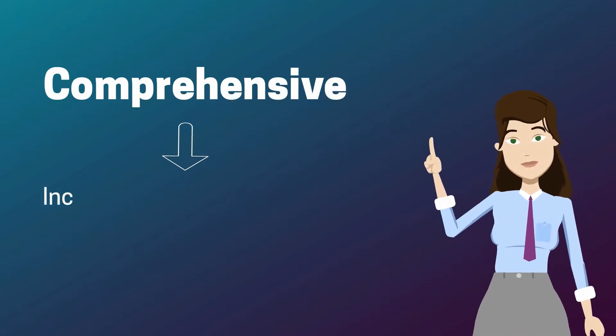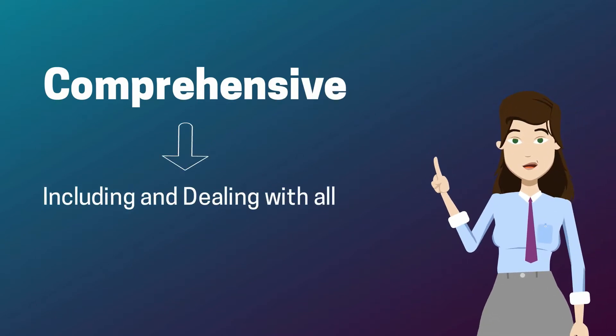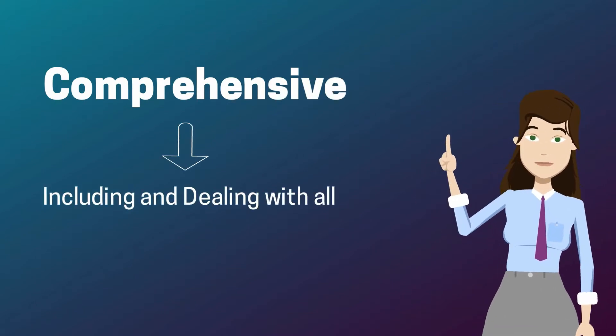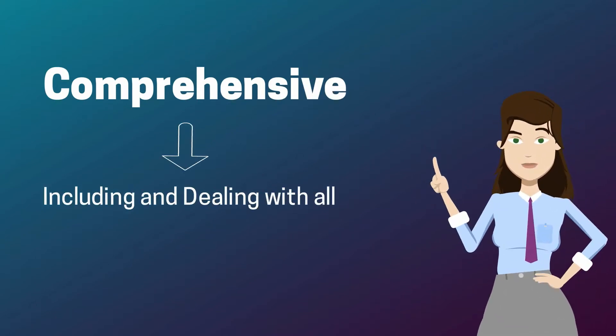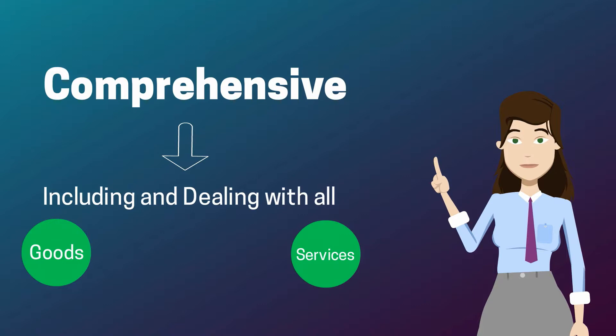Here the word 'comprehensive' means including and dealing with all. As the name goods and service tax specifies, it's a tax charged on both goods and services at the same time, and there's no segregation as there was in the earlier regime.